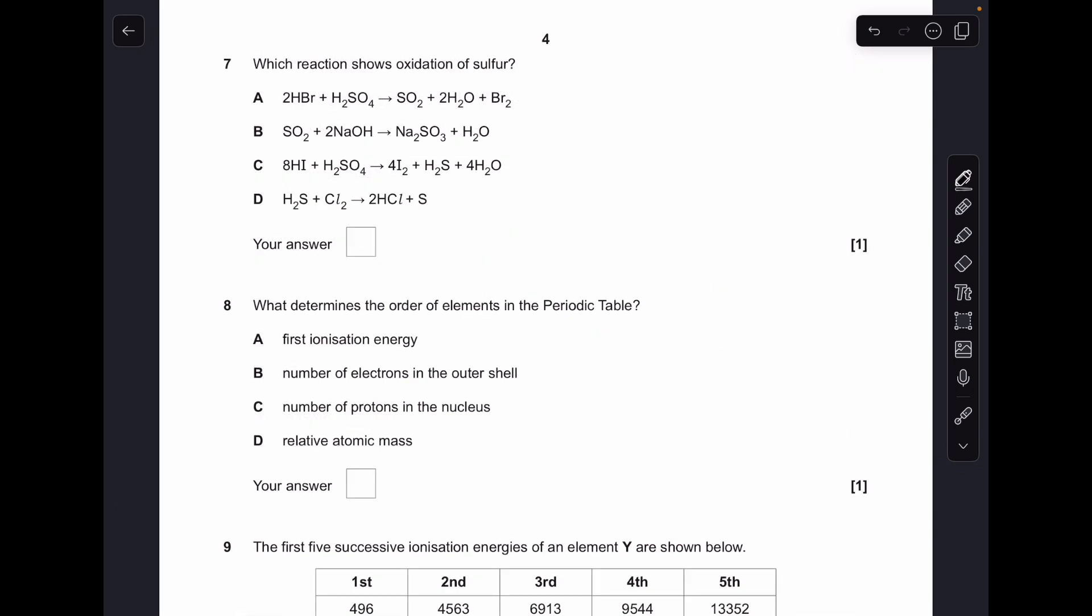Number 7, we're looking for an increase in the oxidation number of sulphur, so what I'll do is work out the oxidation numbers of sulphur in everything, just for revision. So, in A, we're going from plus 6 to plus 4, so that's a decrease, that's a reduction of sulphur, B, plus 4, stays at plus 4, so there's no change there, so it's certainly not oxidation, C, plus 6, down to minus 2, another drop, so that's a reduction again, and D, minus 2, up to 0, so that's an increase, oxidation, D is the answer.